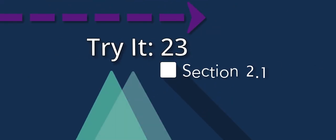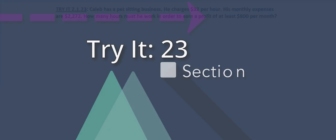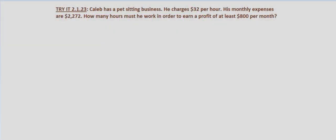In this inequality problem we're told that Caleb has a pet sitting business and he charges $32 per hour. His monthly expenses are $2,272. How many hours must he work in order to earn a profit of at least $800 per month?